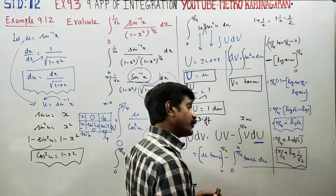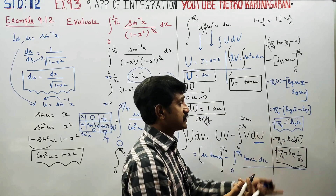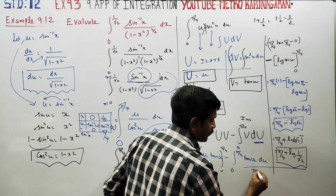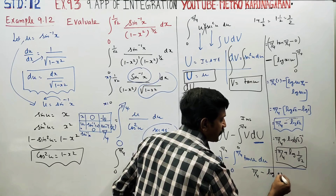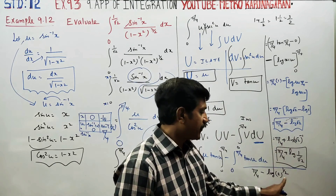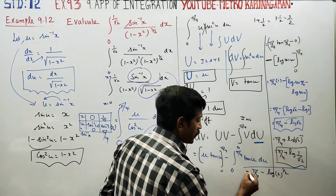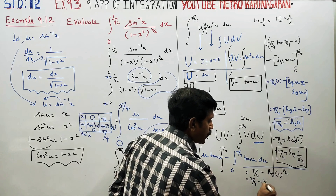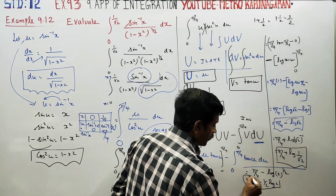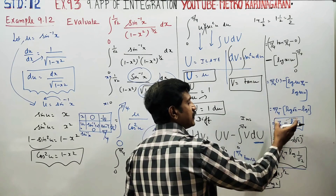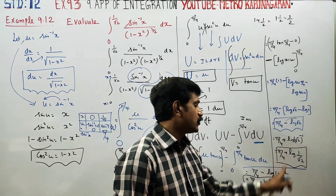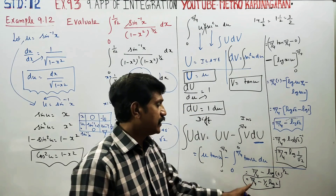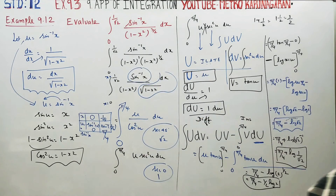This is the result, and it matches the book answer. The style of presentation may differ from student to student — for example, writing π/4 minus log(√2) or π/4 minus (1/2) log 2. The methodology and reaching the correct answer is what is very important. Thank you.